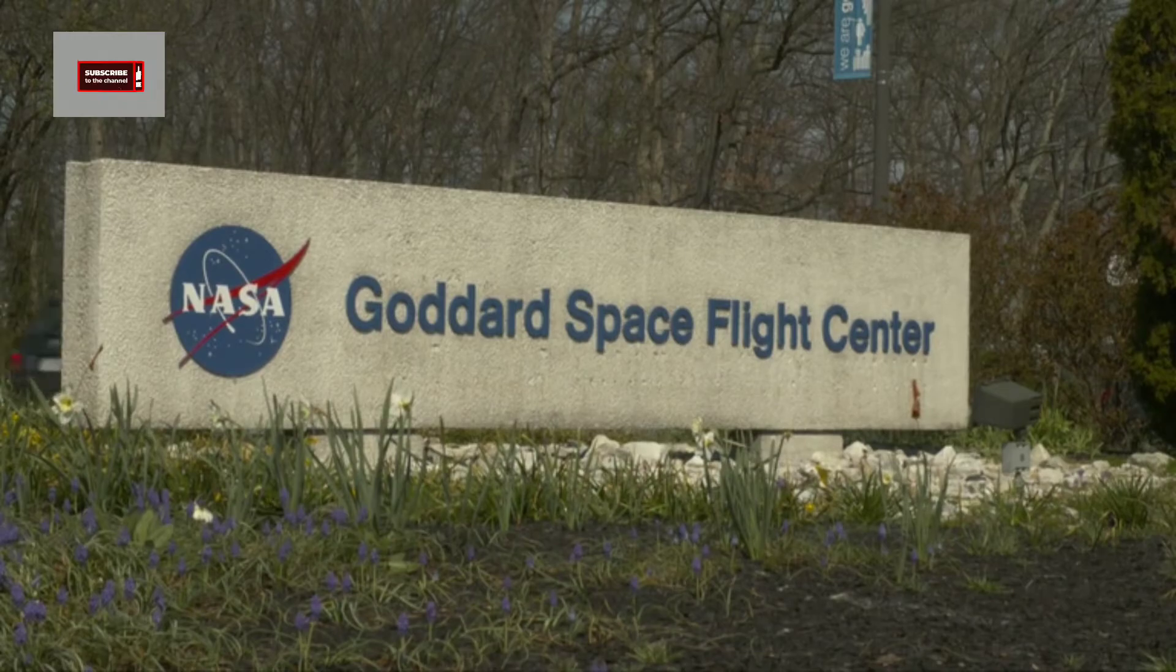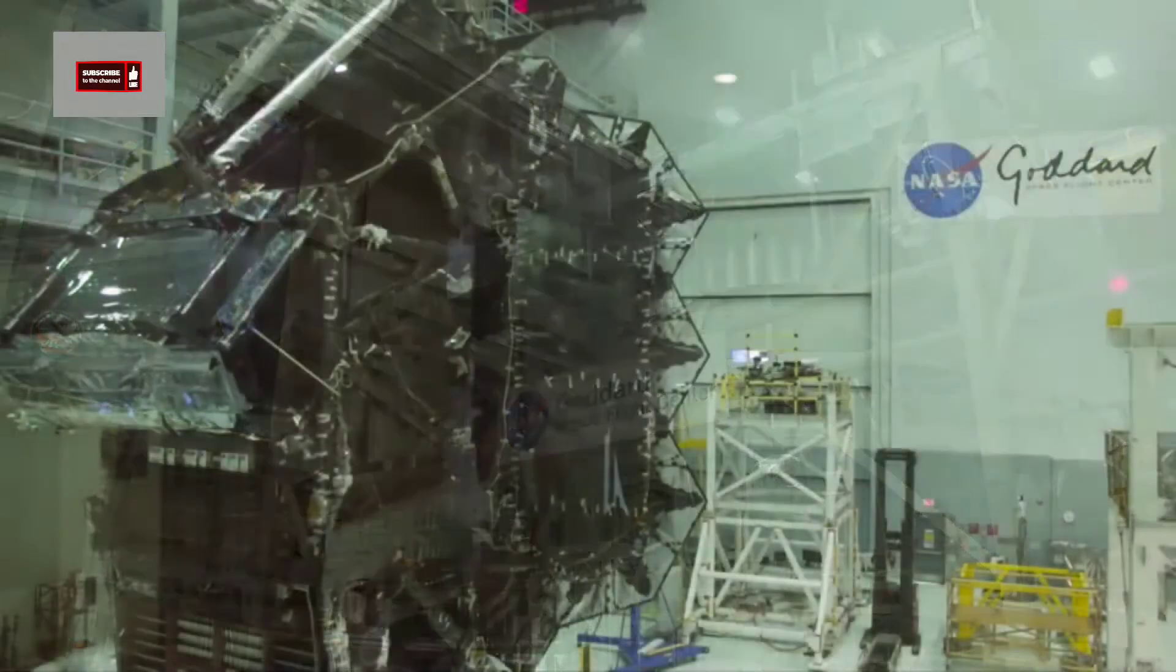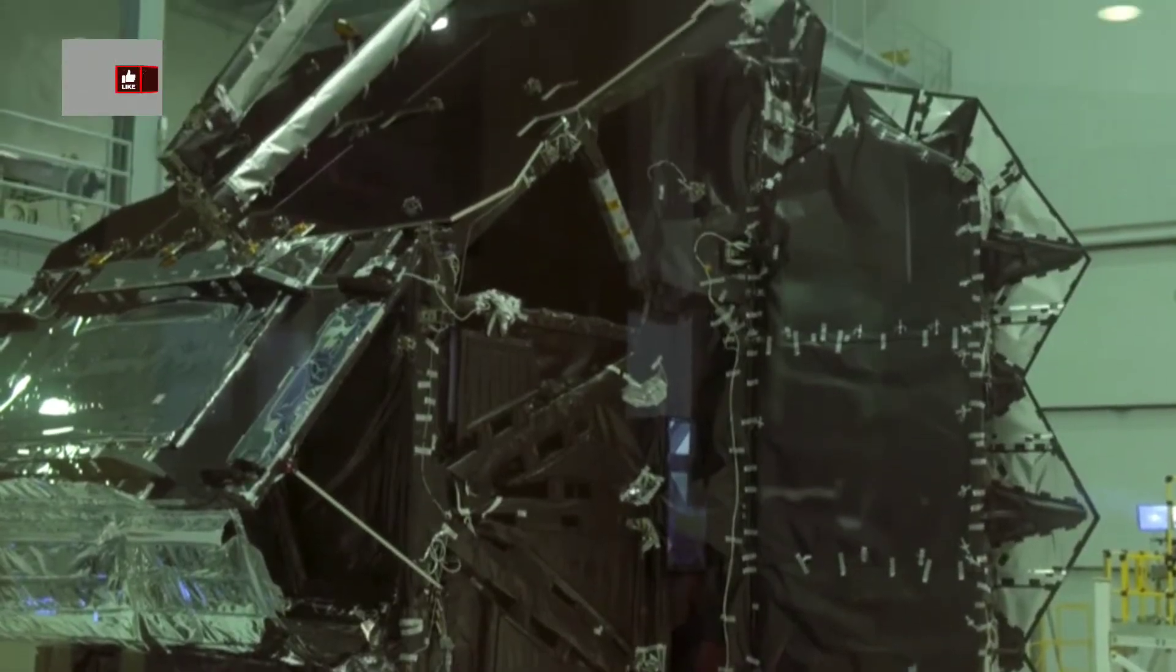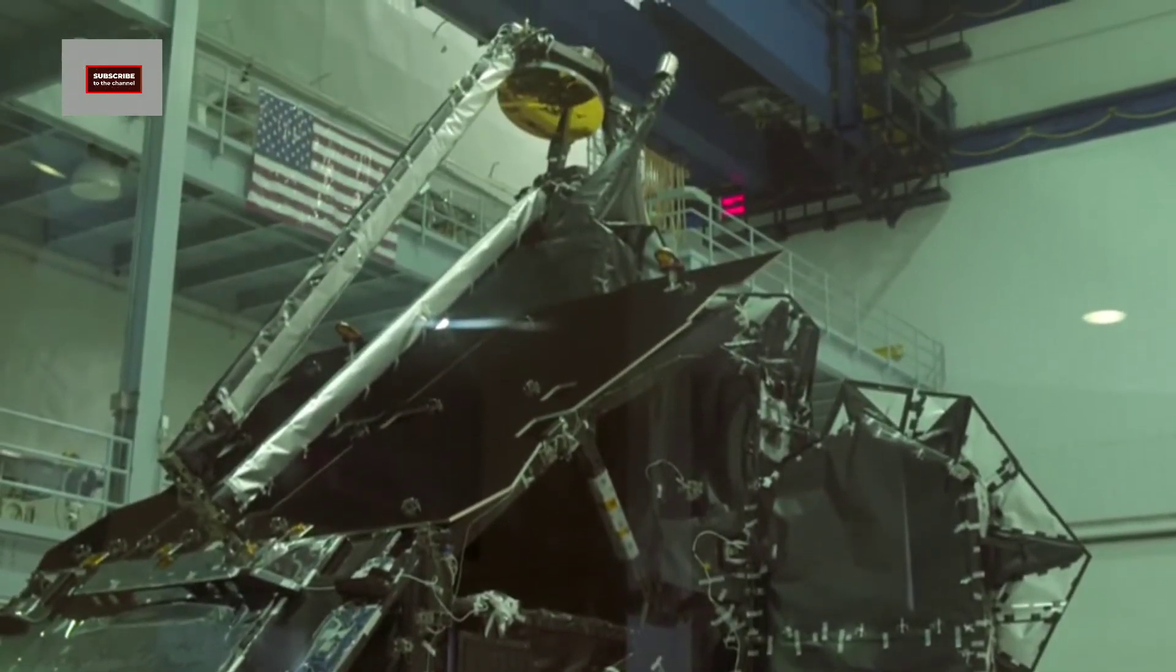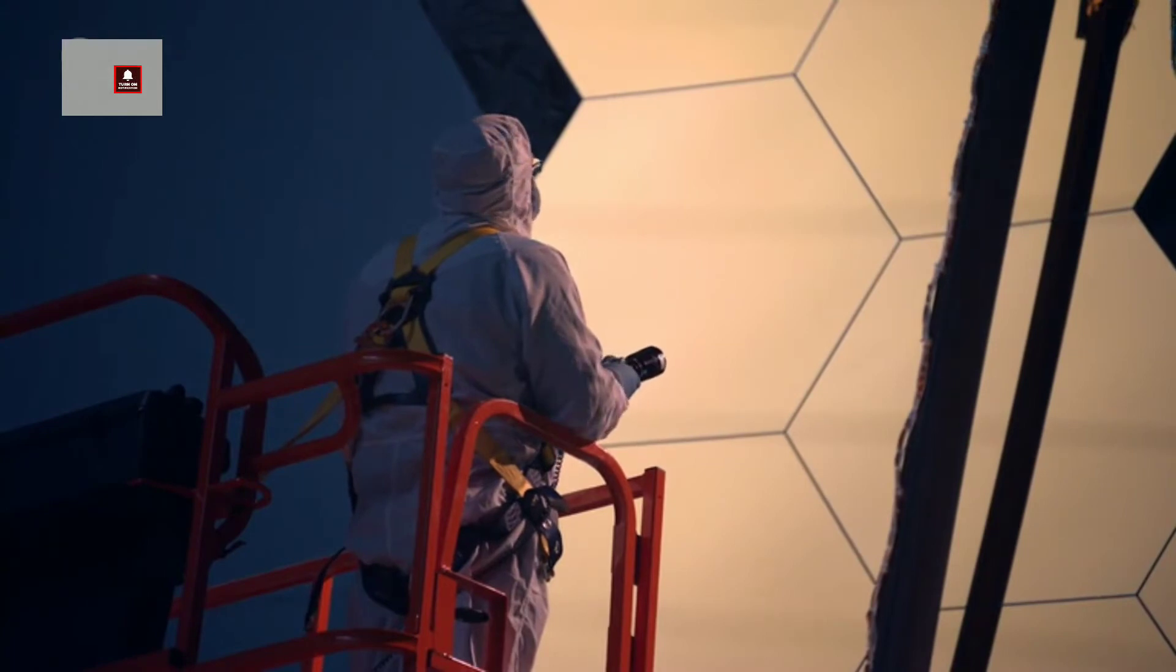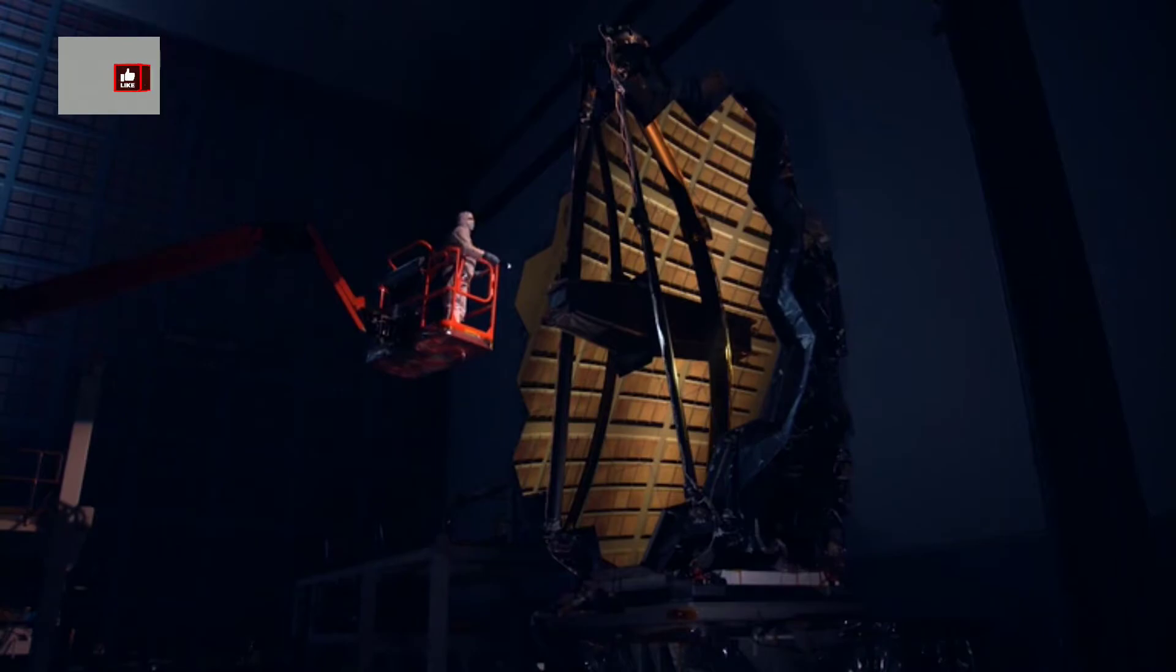The observatory of the James Webb Space Telescope is comprised of three elements: the integrated science instrument module ISIM, the optical telescope element OTE which includes the mirrors and backplane, and the spacecraft element which includes the spacecraft bus and sun shield.